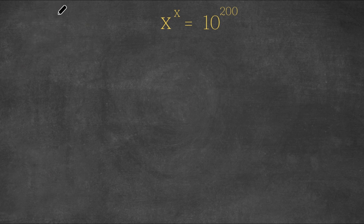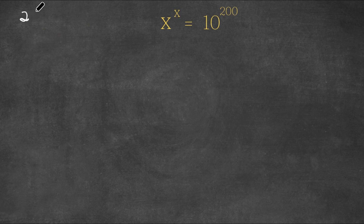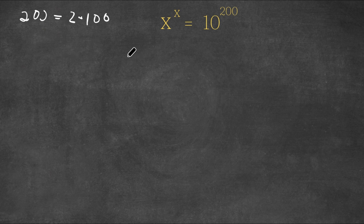Hey guys, welcome back to Click Academics. In today's video I'm going to be teaching you how to solve this exponential equation. We have x to the power of x is equal to 10 to the power of 200. Now 200 is equal to 2 times 100, so I'm going to replace 200 with 2 times 100. So now we have x to the power of x is equal to 10 to the power of 2 times 100.